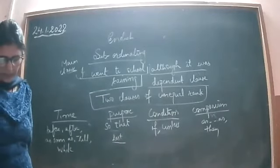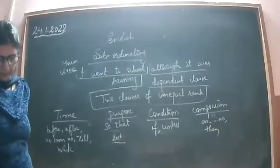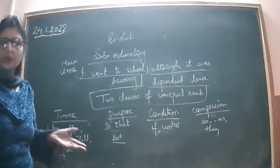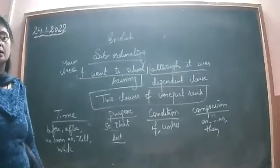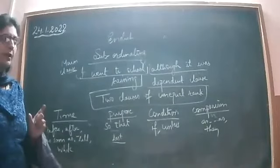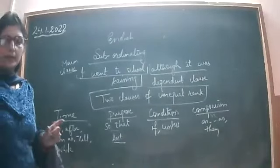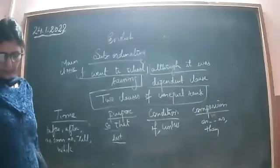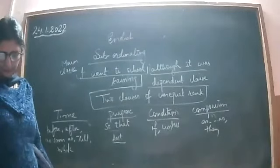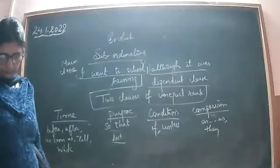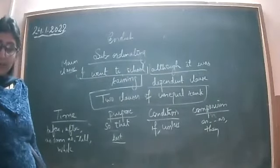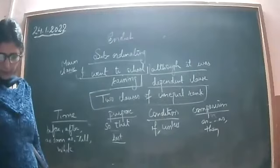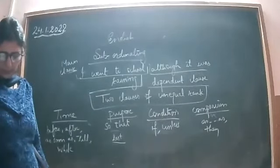Fourteenth: 'If we had asked for help, we would surely have received it.' — 'if we had asked for help' is the dependent clause, so 'if' is a subordinating conjunction. Remember: in subordinating conjunctions, one is always the main clause and the other is always the dependent clause. Fifteenth: 'Poonam danced so well that everybody praised her.' — 'that' is a subordinating conjunction of reason.